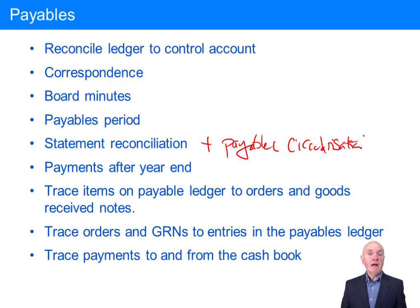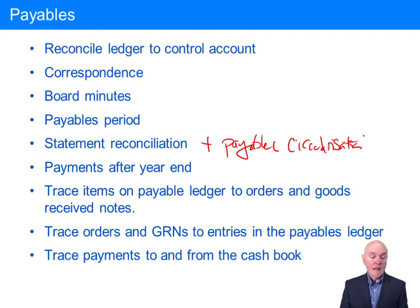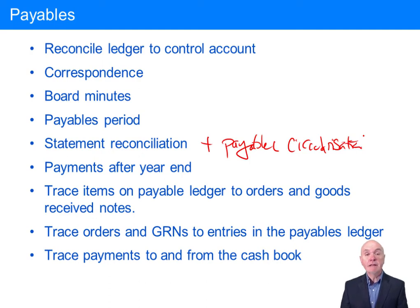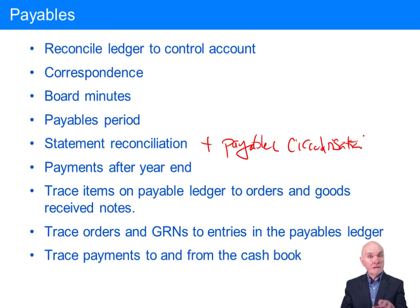Payments after year end — another test of detail. If we're saying that we owe somebody 10,000, stemming from an invoice around the 2nd of December, still outstanding at the end of December, then we would probably expect to see some cash going out sometime in January. The fact that cash has gone out is giving us some evidence that the payable did actually exist at year end.